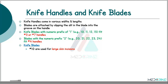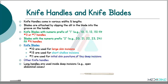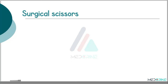Looking at the knife blades: blade number 10 is used for making large skin incisions. A number 15 blade is used for making short, shallow incisions. Number 11 is used for making short, shallow incisions and tiny deep incisions. Long handles are used inside deep incisions, for example open abdominal cases. We also have the beaver knife, used for small and delicate cases.